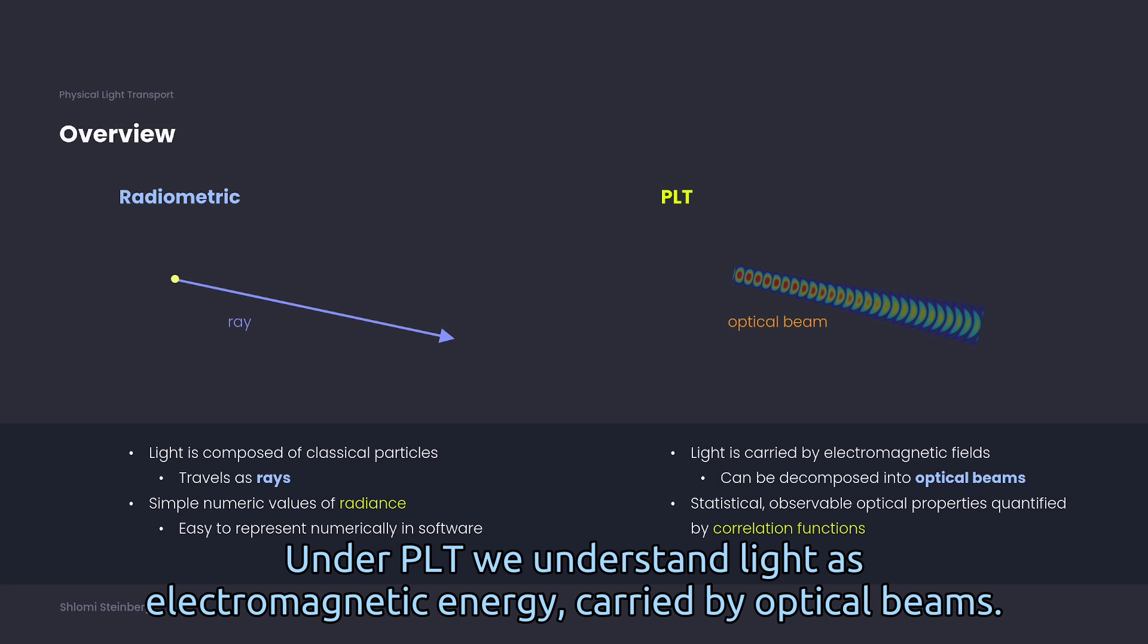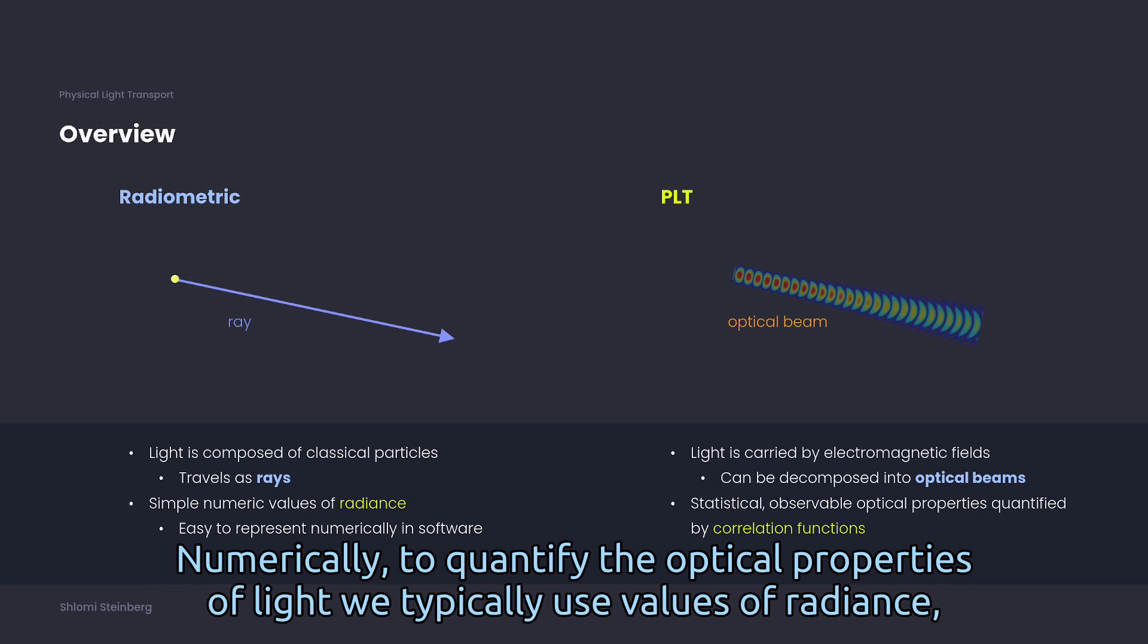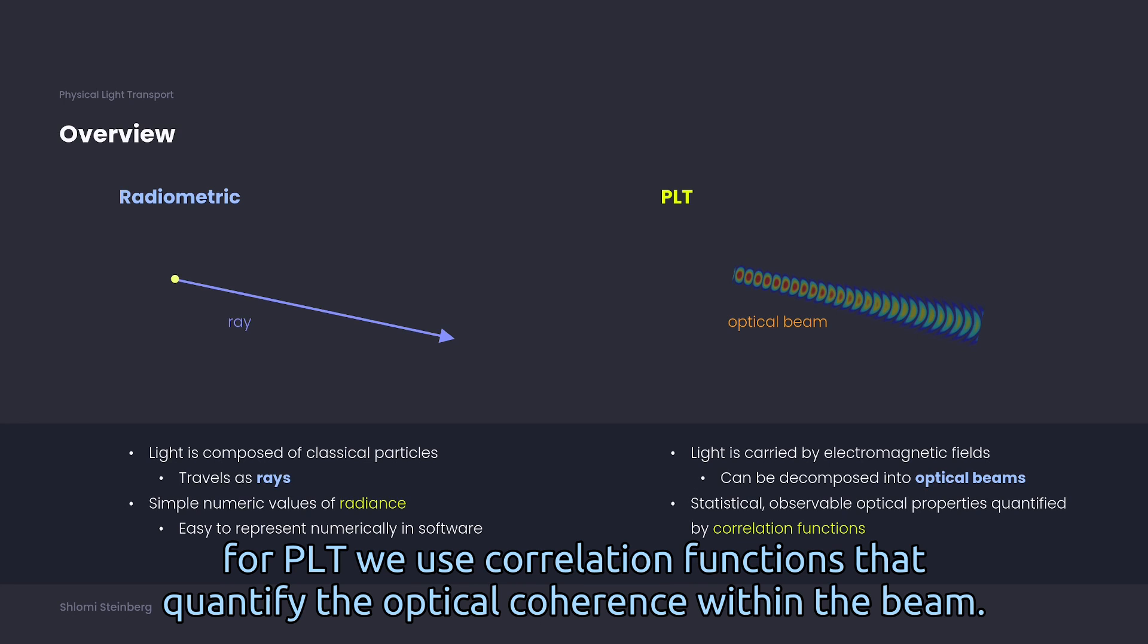Under PLT, we understand light as electromagnetic energy carried by optical beams. Numerically, to quantify the optical properties of light, we typically use values of radiance. For PLT, we use correlation functions that quantify the optical coherence within the beam.